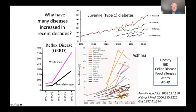Why have many diseases increased in recent decades? This slide shows examples of three of them: juvenile diabetes doubling every 20 or 25 years, diseases of the esophagus like reflux increasing dramatically, asthma going through the roof. We could add obesity, IBD, celiac disease, food allergies, atopy, and attention disorder. So if 10 diseases are going up at the same time, do they have 10 different causes, or is it possible that one cause underlies them all?